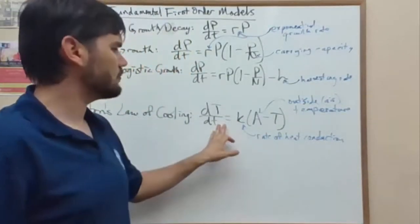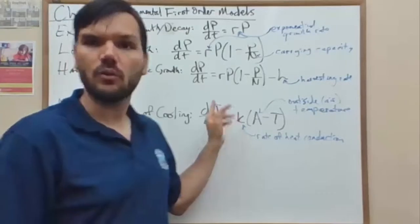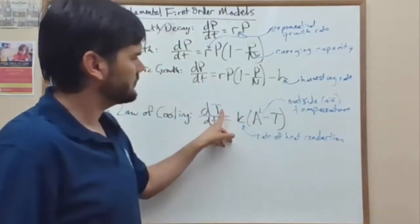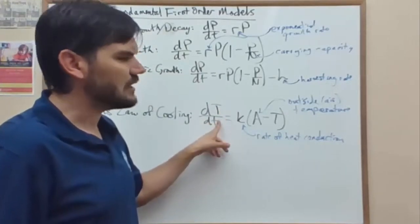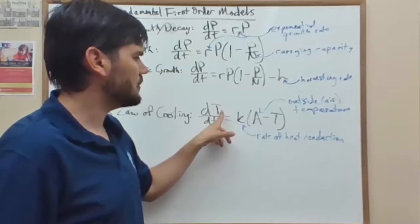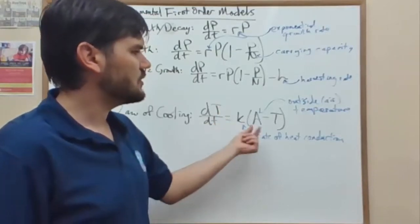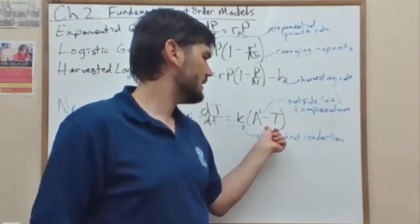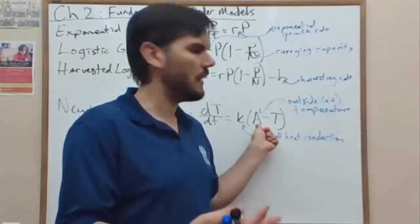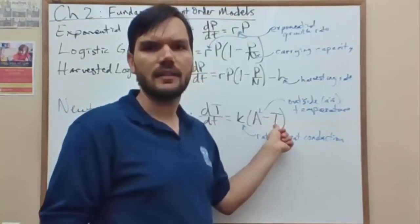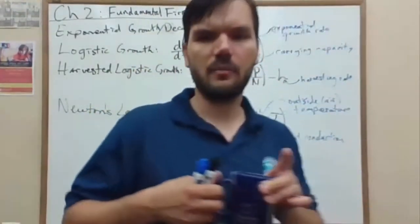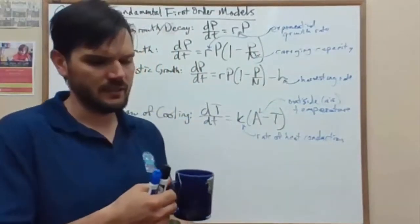And what it says is that the rate of change in the temperature, or you could use this to quantify heat energy. But temperature is a simple way, a way of simplifying that. The change in the temperature is proportional to the difference between the outside temperature around a certain body and the temperature inside that body. One quick example of that is a cup of coffee or tea. In this case it's tea.